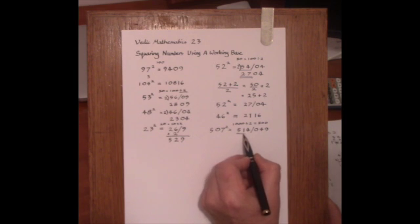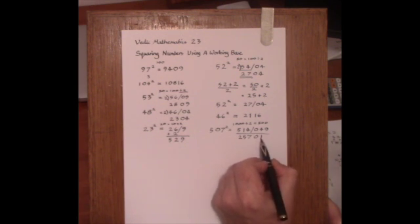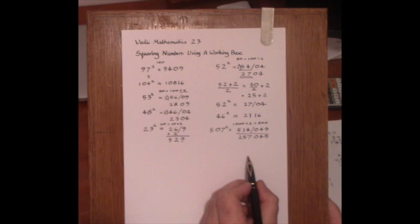And then dividing the left-hand side by 2, we get 257. So the answer is 257,049.